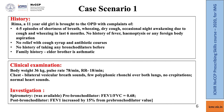Case Scenario 1: Rima is an 11-year-old girl brought to the OPD with 4 to 5 episodes of shortness of breath, wheezing, dry cough, and occasional night awakening due to cough and wheezing over the last 6 months. There is no history of fever or hemoptysis. She was advised cough syrup and antibiotics but found no relief. There is no history of bronchodilator use. She has a family history — her elder brother is asthmatic. On examination, body weight is 36 kg, pulse and respiration rate are normal. Chest auscultation shows bilateral vesicular breath sounds and few polyphonic rhonchi over both lungs, no crepitations, heart sounds normal. Spirometry showed a pre-bronchodilator FEV1/FVC ratio of 0.68 (68%), and post-bronchodilator FEV1 increased by 15%. What is your diagnosis?